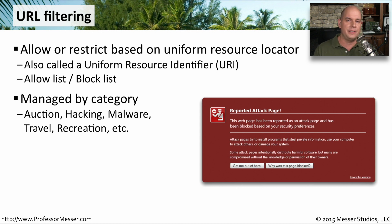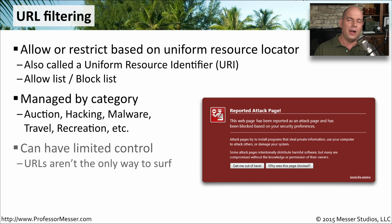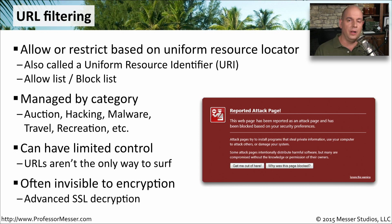URL filtering is a very good way to block what's in the browser, but there are other ways to browse, and perhaps it's not just a browser you need to worry about. So although this is a very good way of content filtering, it is not the only way. Many of these URL filters are oblivious to anything that's encrypted. As long as the communication is in the clear, it's able to identify the URL and block it based on these categories. But if you're connecting to a site over an SSL connection, the encrypted connection is invisible to many of these URL filters.